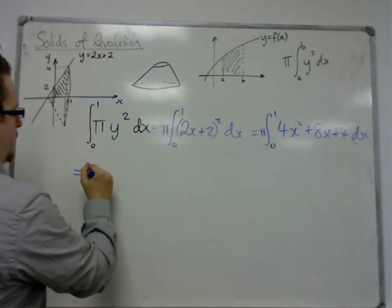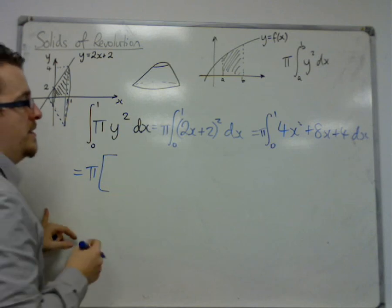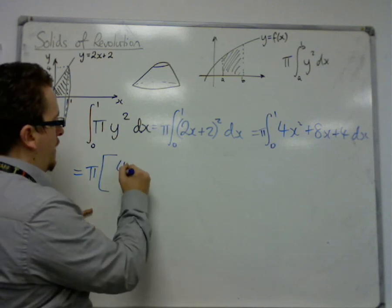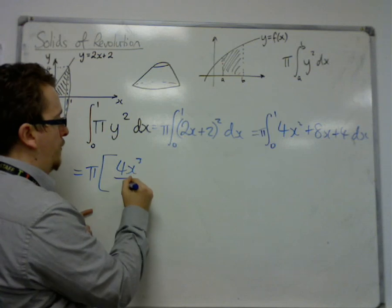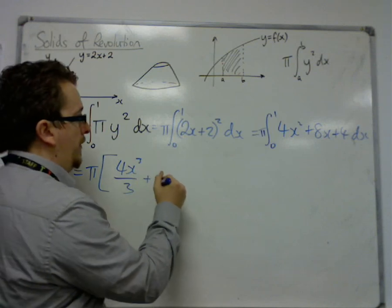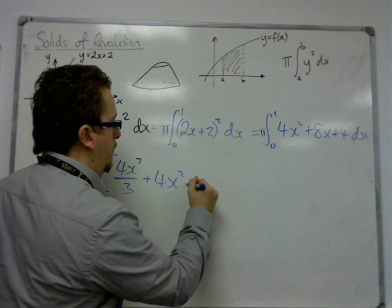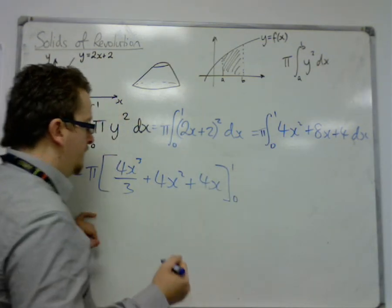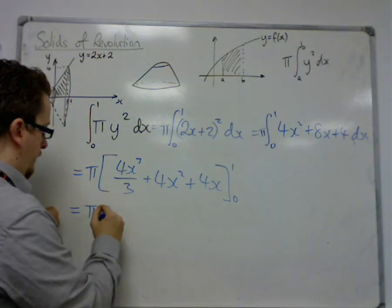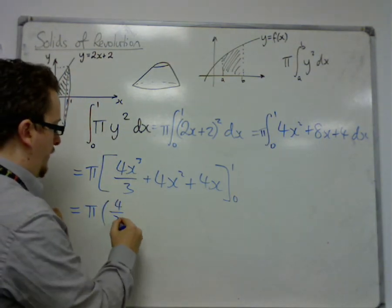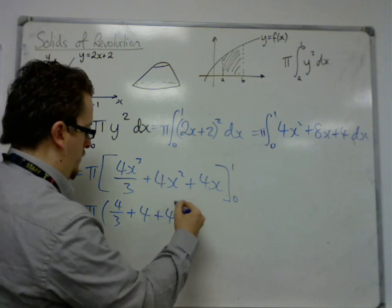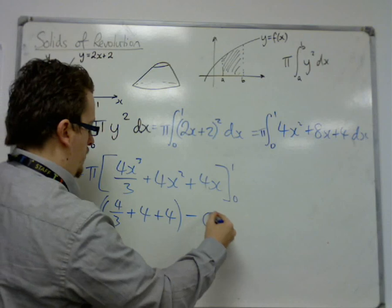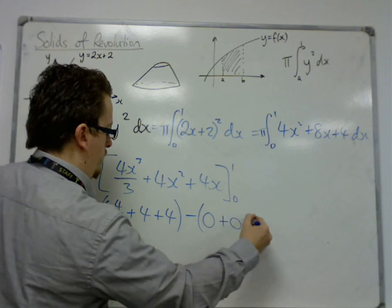I must then integrate. So keep that pi on the outside. Pi is going to be there all the way through. So we're going to get 4x cubed over 3 plus 4x squared plus 4x between 0 and 1. So we're going to get 4 thirds plus 4 plus 4, take away 0, plus 0, plus 0.